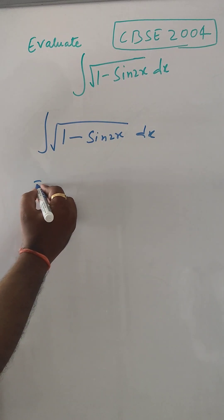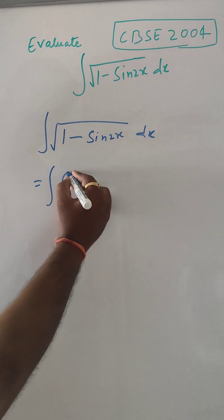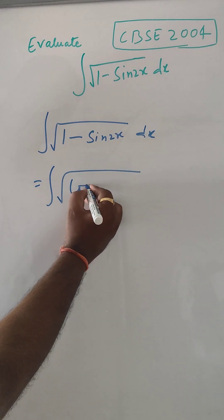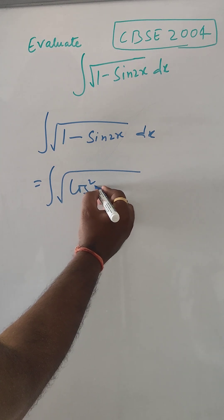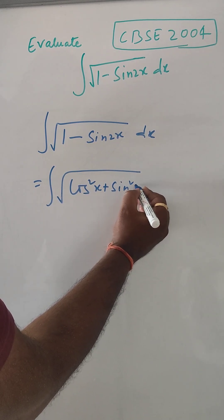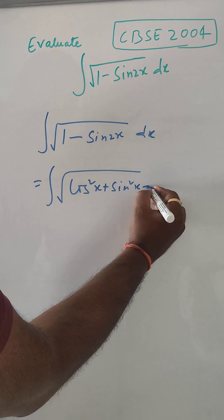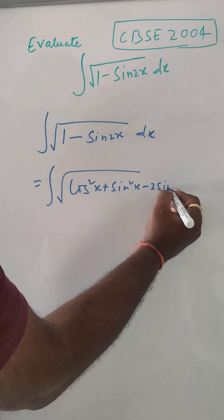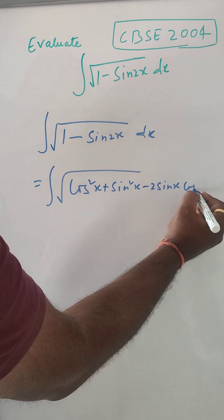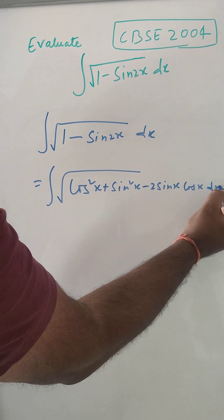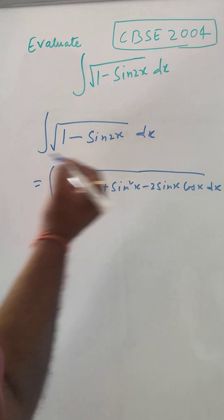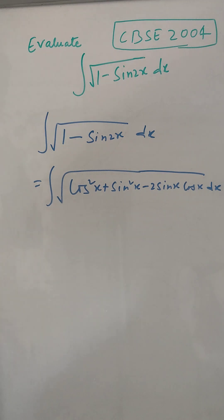So, 1 can be written like cos square x plus sin square x and sin 2x can be written as 2 sin x cos x, and here dx and this is till here under root.